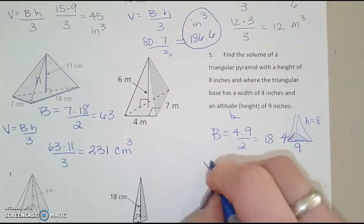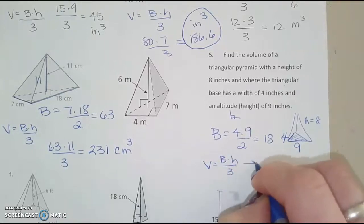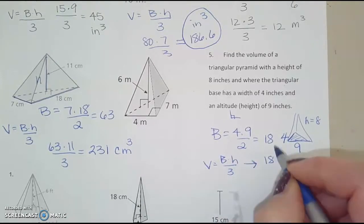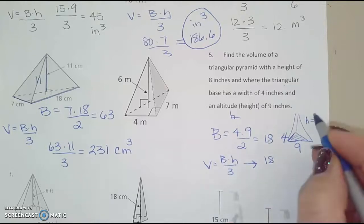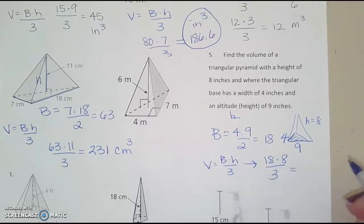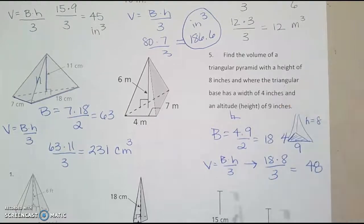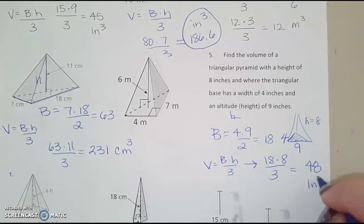So that's capital B. And then volume, base times height divided by 3, would be 18 for the area of my base, times the height of 8. And then divided by 3, and I get 48. And this would be cubic inches.